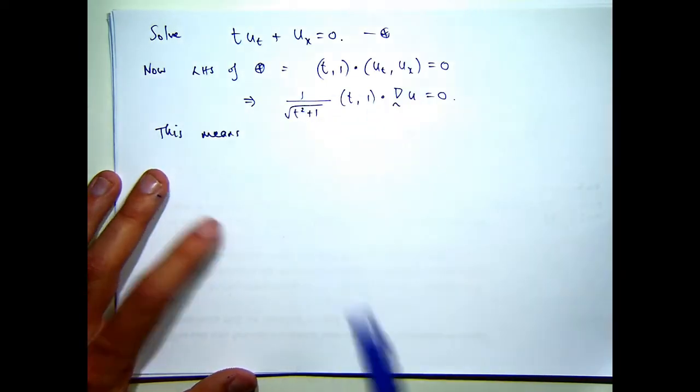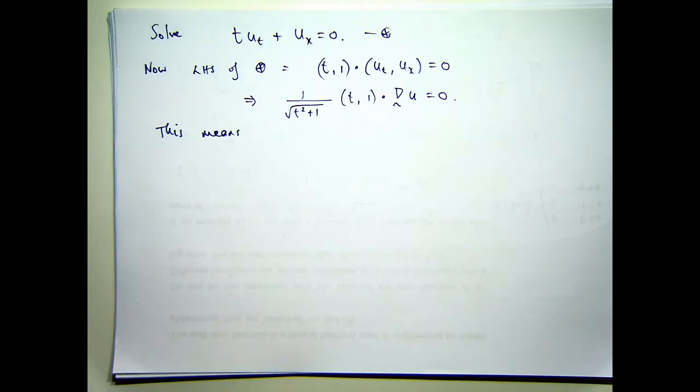So this dot product is just the directional derivative from a course, a calculus 2 course, vector calculus, multivariable calculus, whatever you want to call it.